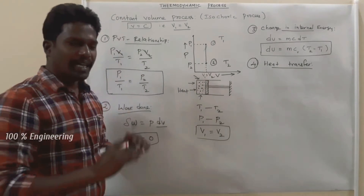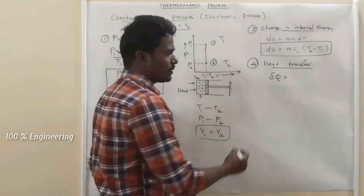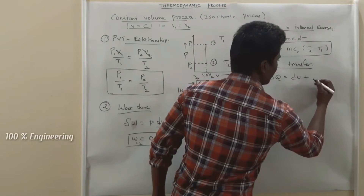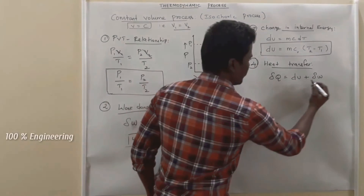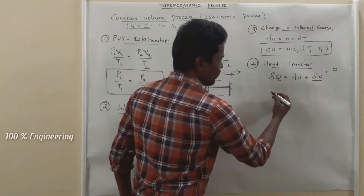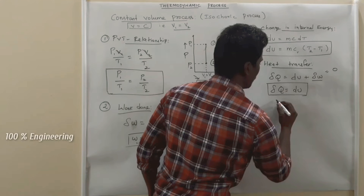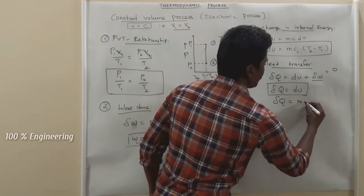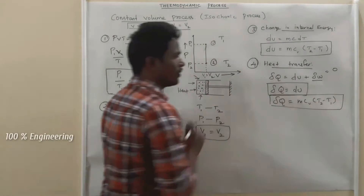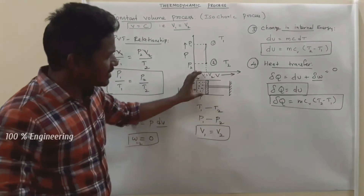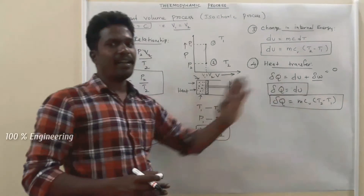The fourth thing is heat transfer. We know that net heat transfer ΔQ is equal to change in internal energy plus work done during the process. Since work done is zero in a constant volume process, net heat transfer ΔQ equals m Cv into (T2 minus T1). This means that the total heat supplied to the thermodynamic system is entirely utilized to increase the internal energy.